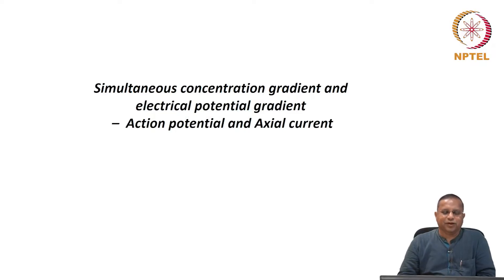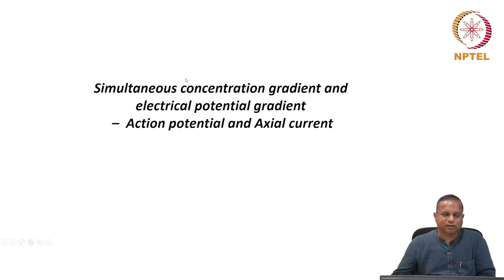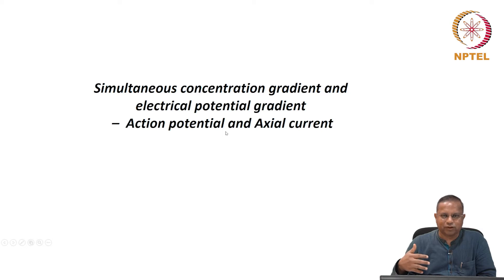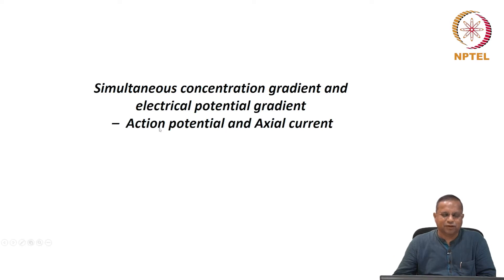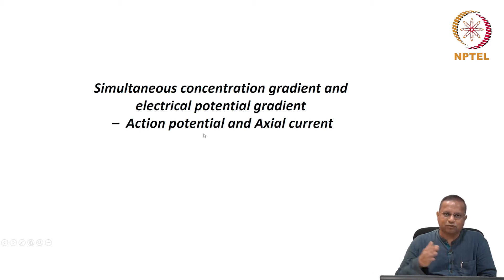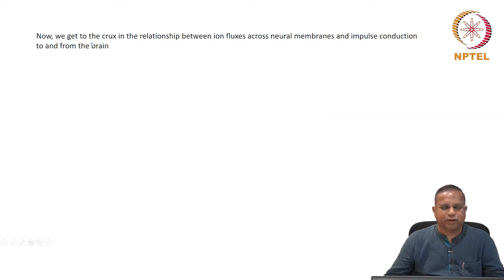Welcome back. We are looking at mass flux or movement of ions when there is a simultaneous concentration gradient and electrical potential gradient. You have already seen the significance of this situation. Now we are going to look at the basis for the working of our senses, which happens to be something called action potential and axial current. The action potential arises because of the movement of ions across a neural membrane, and we are getting to the crux of the relationship between ion fluxes across the neural membrane and impulse conduction to and from the brain.